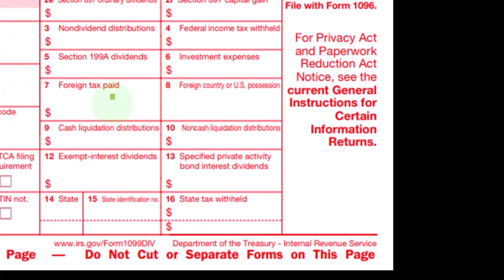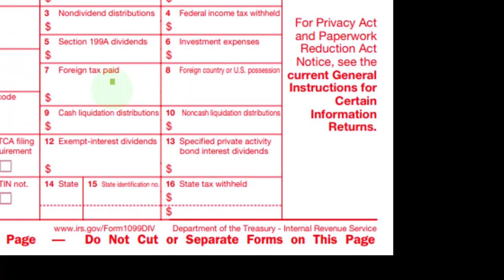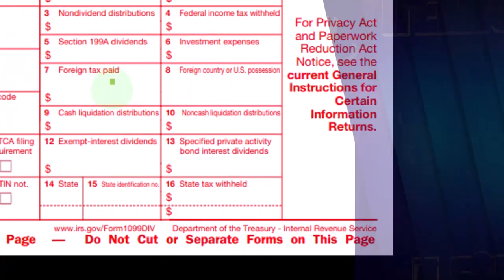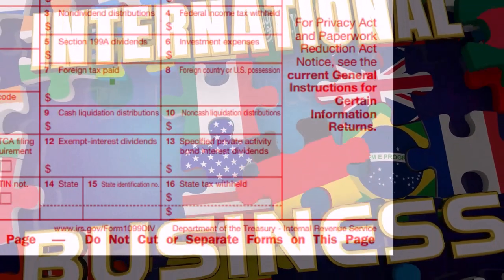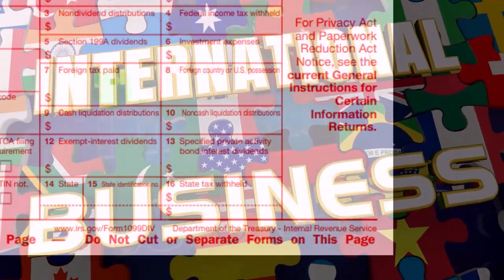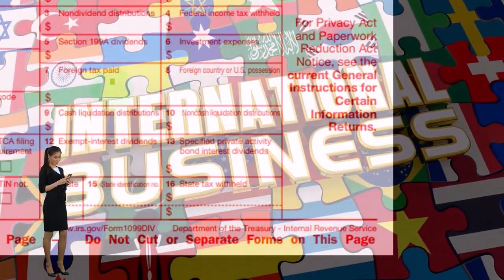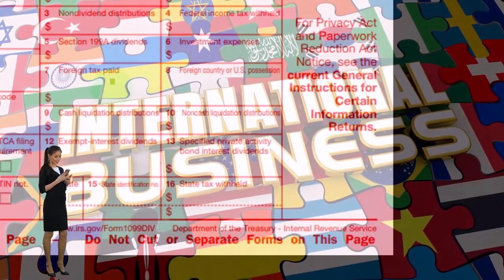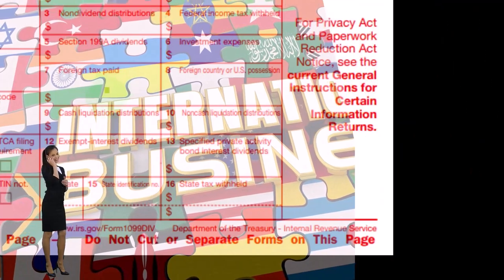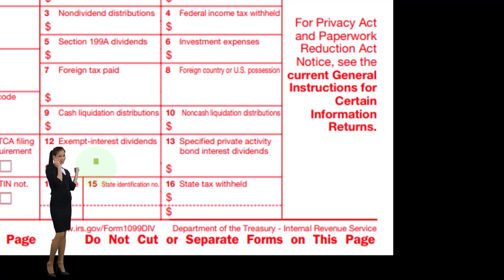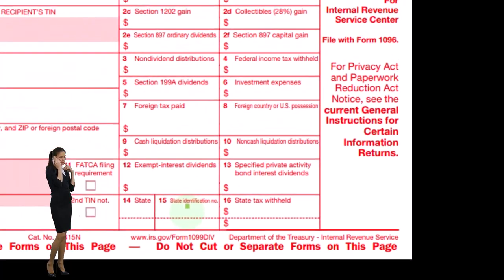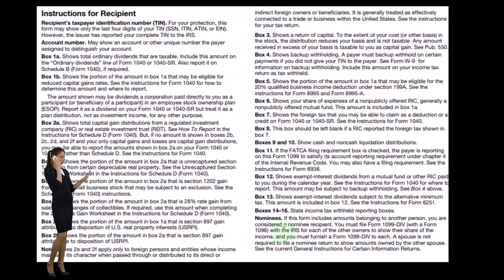Investment expenses and foreign taxes — sometimes you'll have issues if there are investments in foreign countries where you paid foreign taxes, and most software will help determine where to populate that. Then there are cash liquidation distributions, non-liquidation distributions, exempt interest dividends, special private activity, and state information down below.